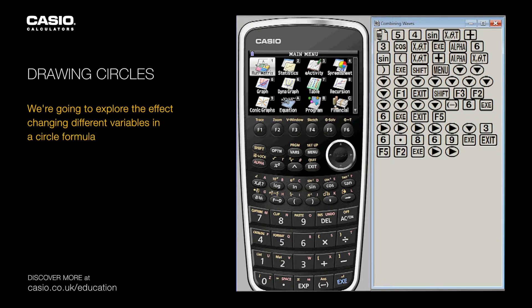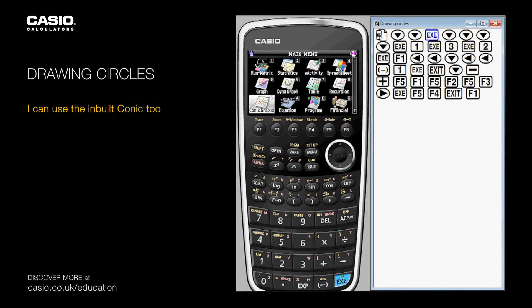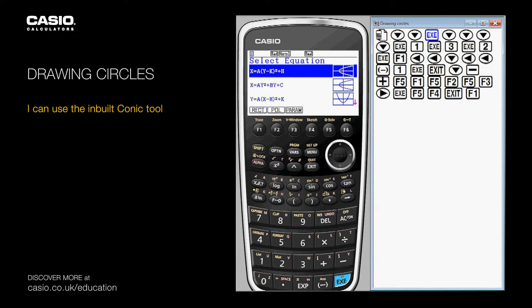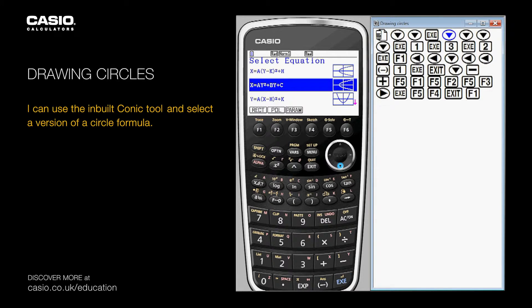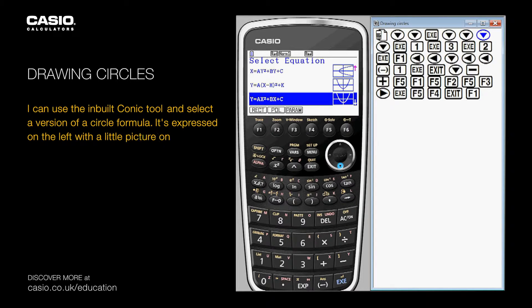We're going to explore the effect changing different variables in the circle formula has. I can use the inbuilt conics tool and select a version of a circle formula. It's expressed on the left with a little picture on the right.